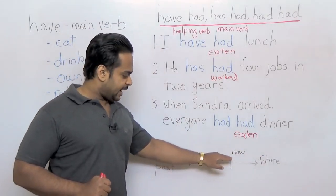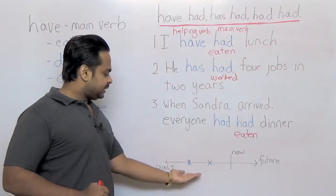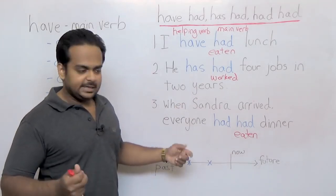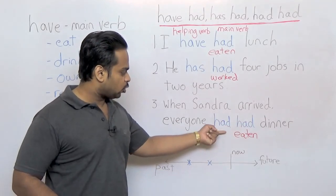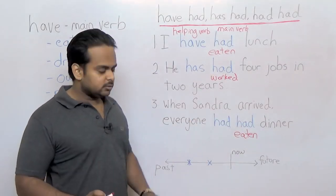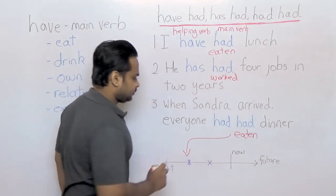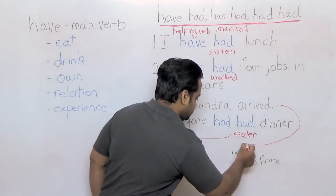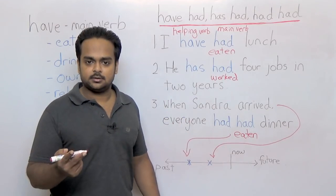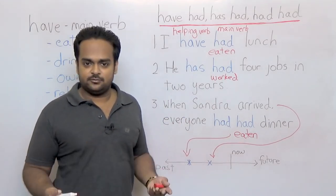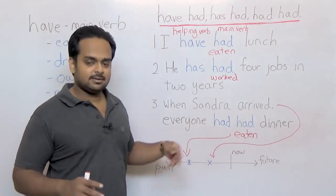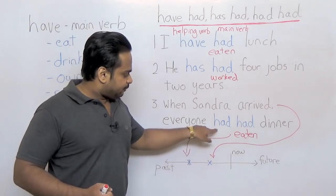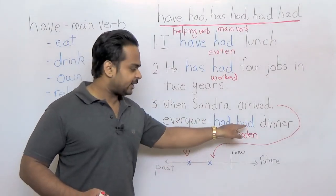Down here I have a timeline and I will show you the sentence on the timeline to make it easier for you to understand. Let's say that that's the future. This is now and over on this side is the past. You see here that I have marked two actions in the past. Now from this sentence, which is the first action? Well it's easy. This action is first because we've put the word had in front of it. So first what happened was everyone had eaten dinner. That happened first. And after some time, maybe an hour later, Sandra arrived. So that action happened second.